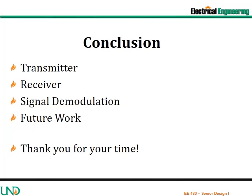In closing, the transmitter module is working well enough to continue moving forward with prototyping the remainder of the signal path. The receiver module is working well. A larger aperture photodiode is currently being utilized with no negative effects and allows for better alignment. Signal demodulation seems to be right on track with standard circuits utilized for demodulation. Future work includes configuring the relay for pass-through signals and then signal regeneration. Thank you for your time.